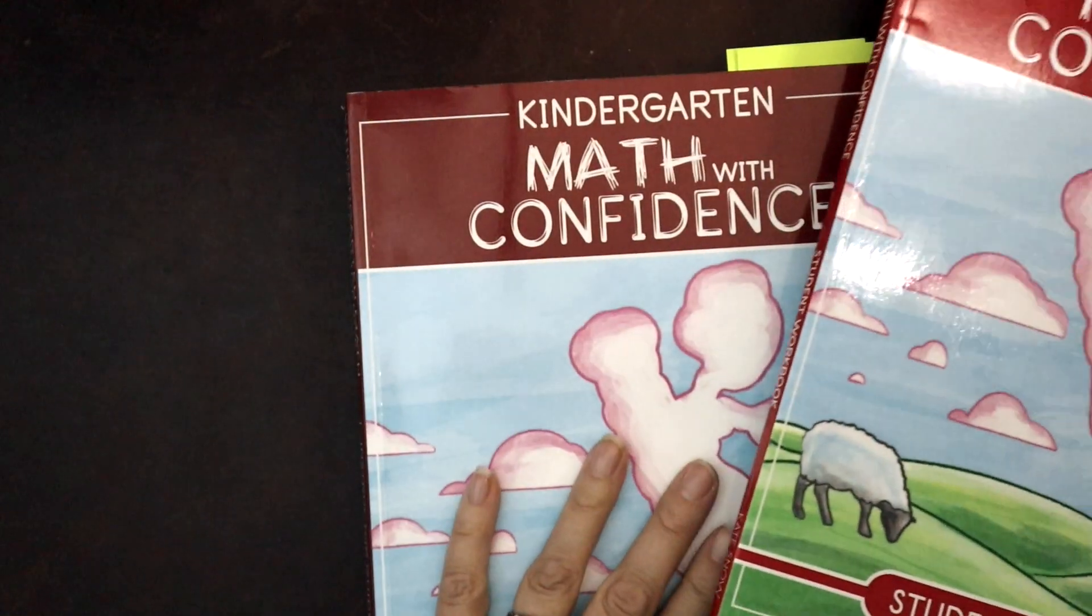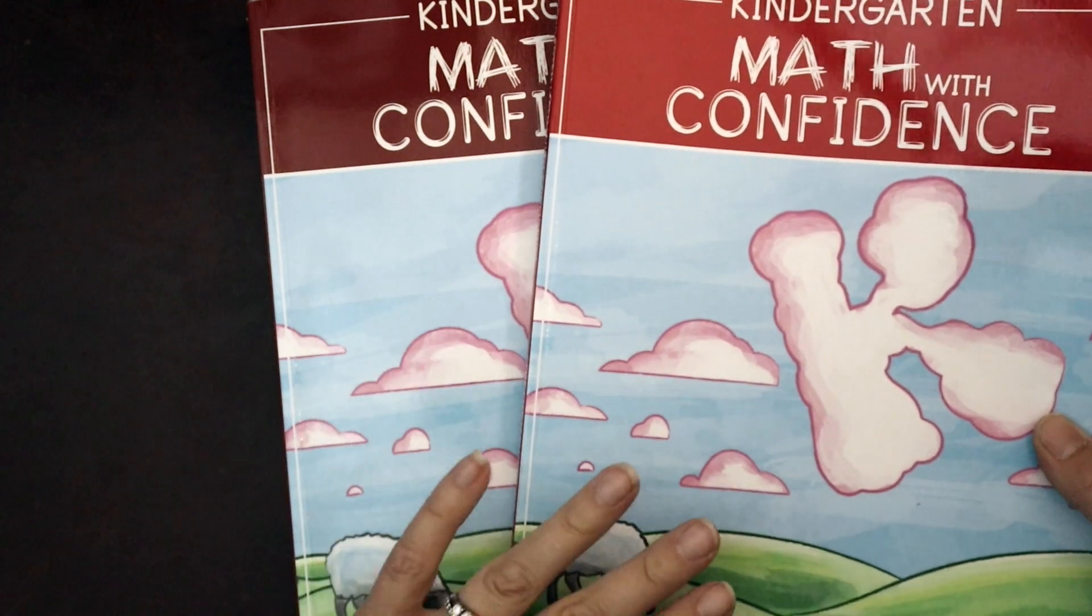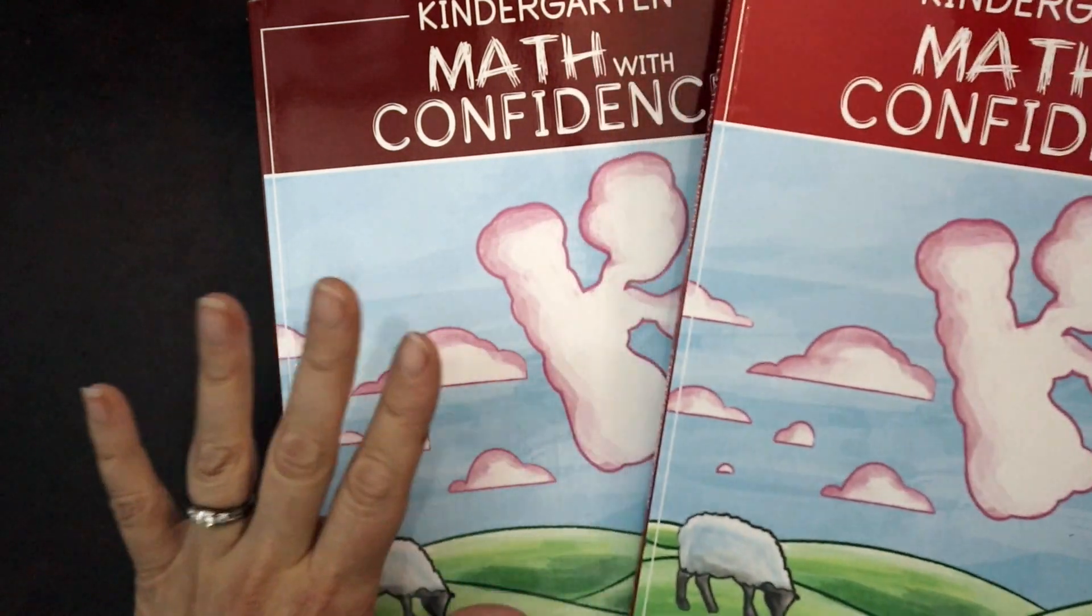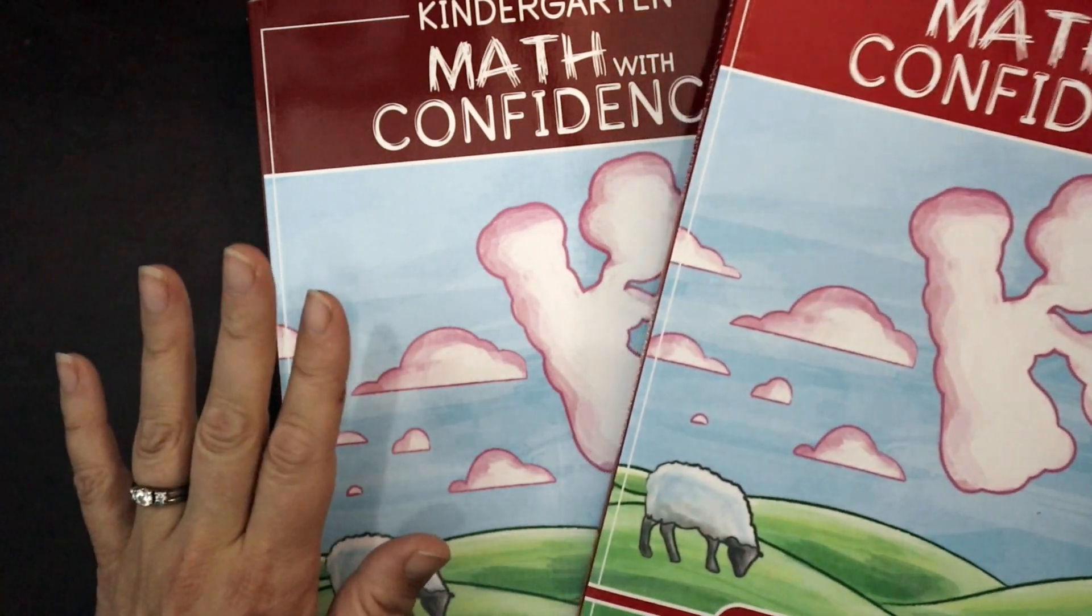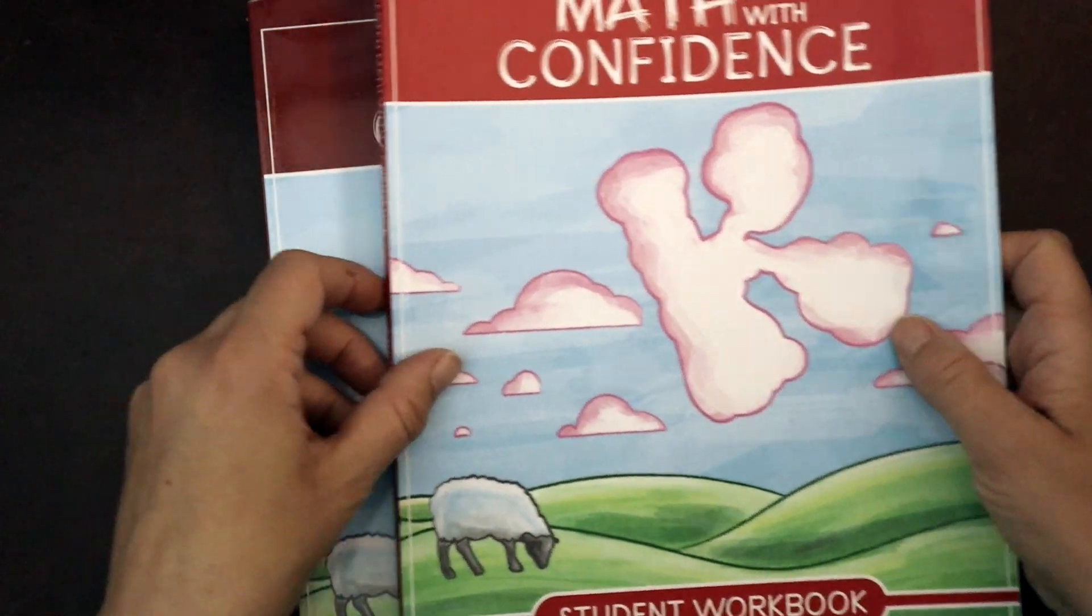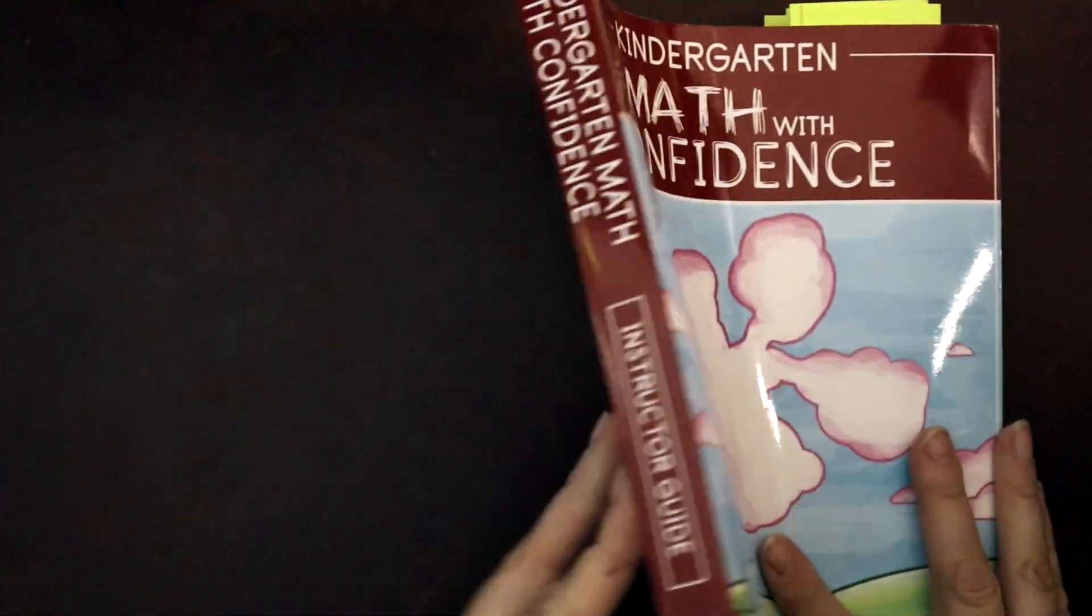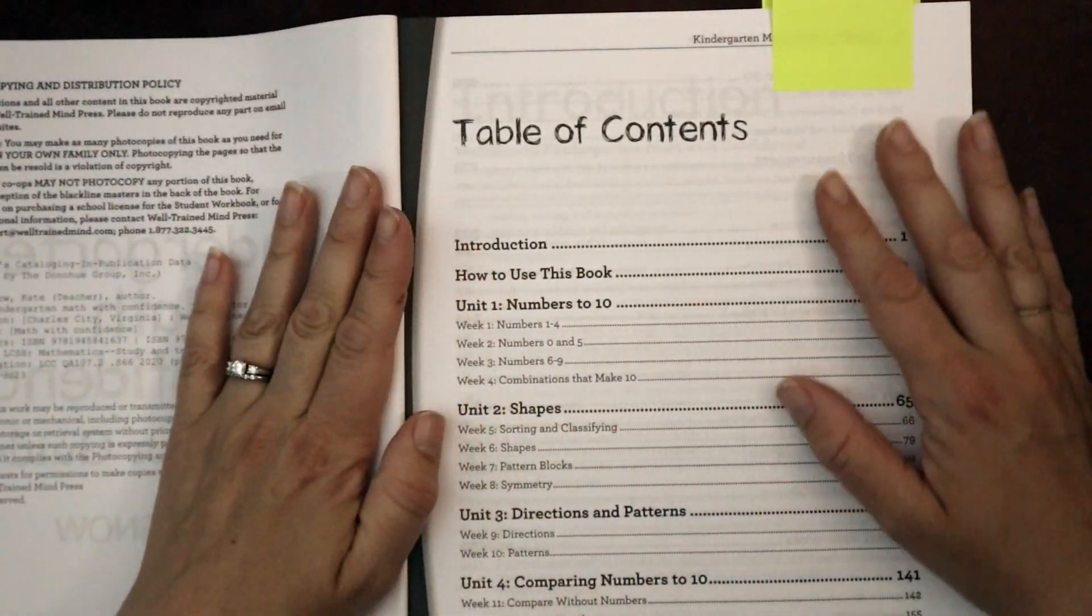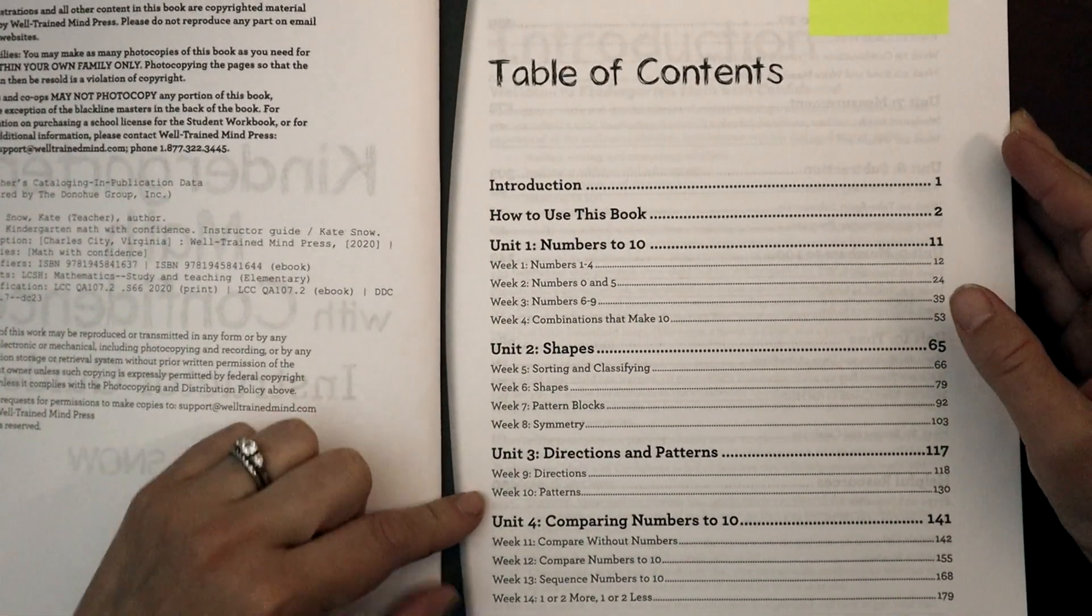So the Math with Confidence program is very straightforward. It is no frills. It is written for a parent and it is comprehensive. The two components of the curricula are your instructor guide and your student workbook. Let's look at the instructor guide first. So this is the Math with Confidence instructor guide. It has a table of contents.